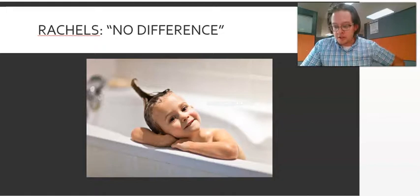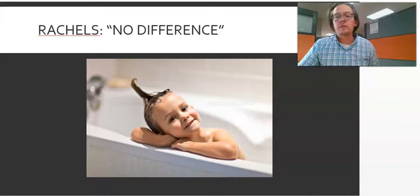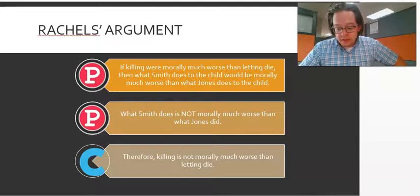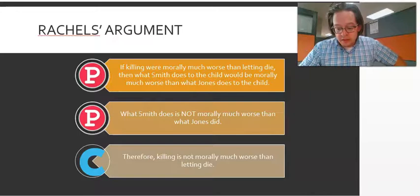Therefore, Rachels argues the do-allowed distinction is not a morally relevant one. So if we were to rephrase this in argument form, we would say that premise one: if killing were morally much worse than letting die, then what Smith does to the child would be morally much worse than what Jones does to the child.